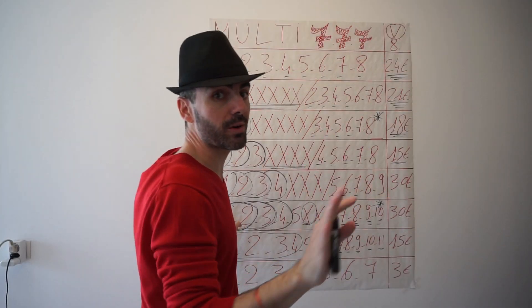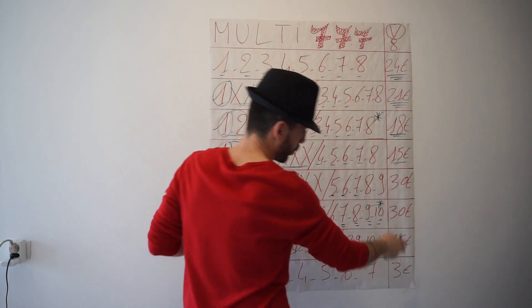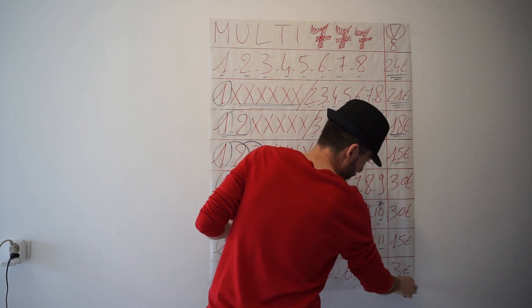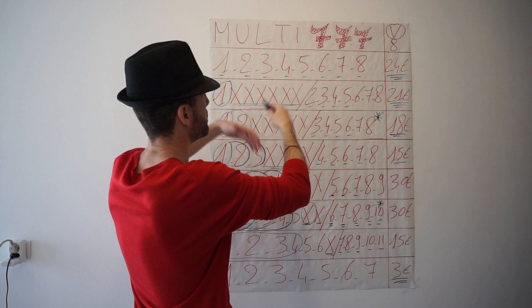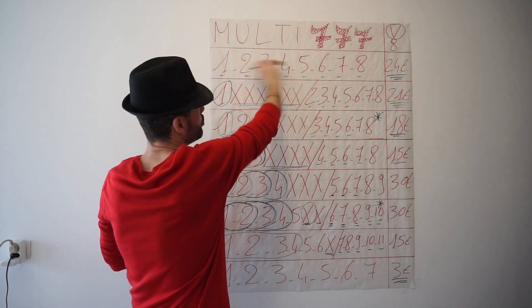Donc faire des multis en sept à neuf chevaux ou dix chevaux à plat, ça sert à rien. Il vaut mieux jouer un simple. 24 euros, donc la différence vous avez vu, de trois euros on rajoute un cheval, donc c'est huit fois plus cher.